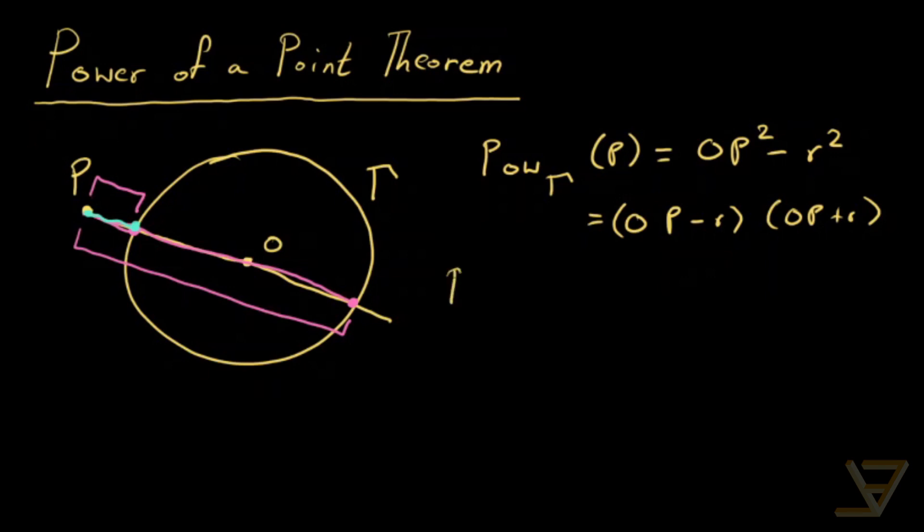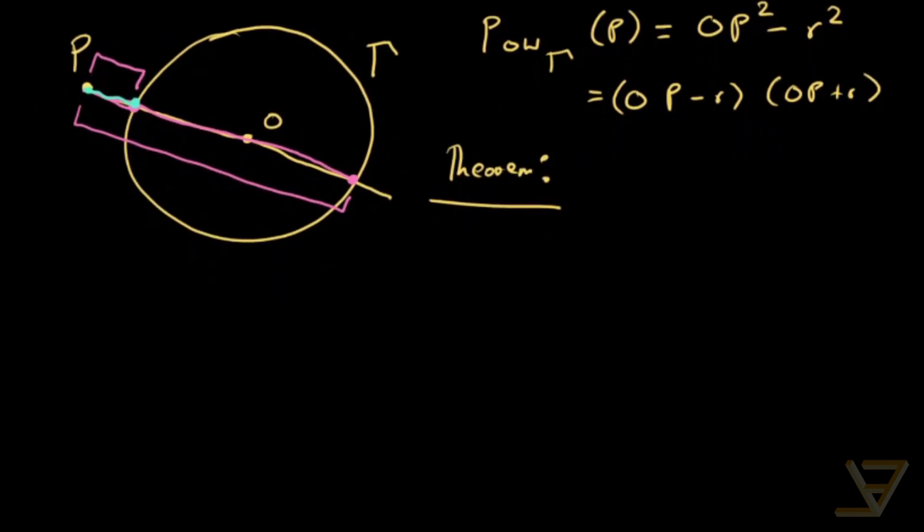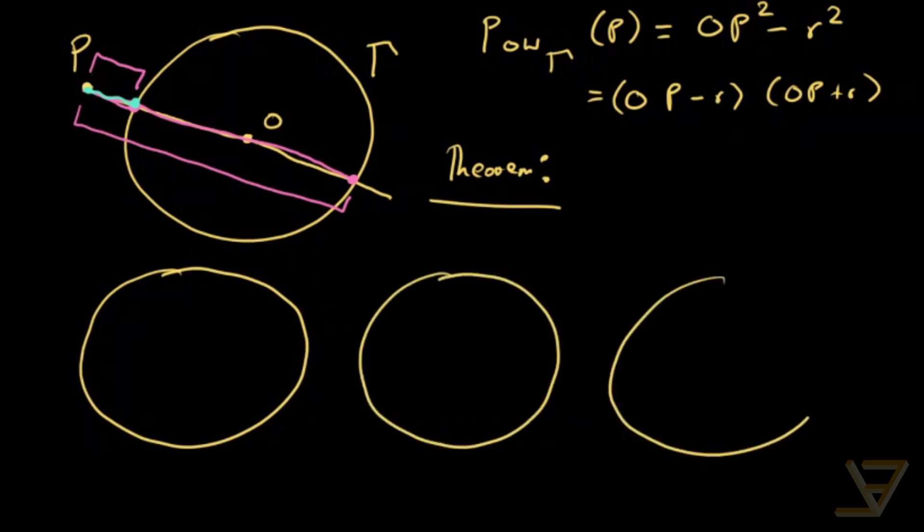What the theorem says is that there are three cases. Let's draw three diagrams here because they're going to correspond to the cases. The first one we've got P as an exterior point which cuts through the circle in a couple of spots. Let's call them X and Y.